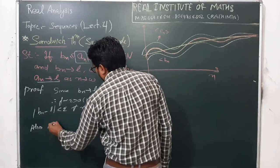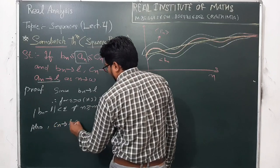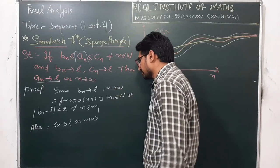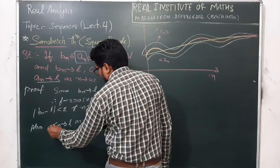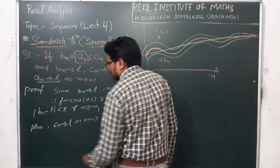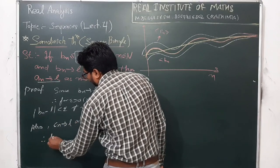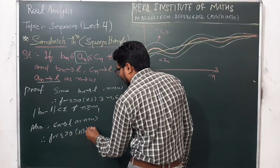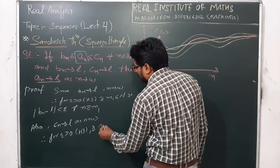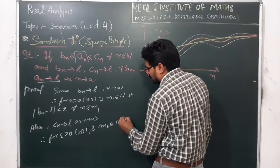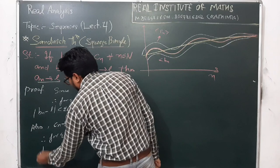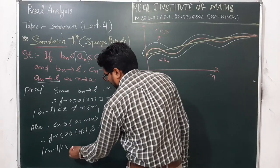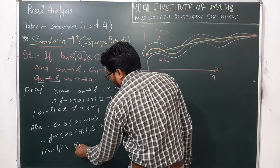Also we have cn converges to l as n approaches to infinity. Again by definition, for epsilon greater than zero, however small, there exists m2 belonging to the natural numbers such that |cn − l| is less than epsilon, and this is true for all n greater than or equal to m2.